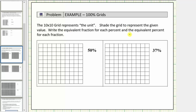In the first example we're given fifty percent. Remember, percent means per hundred, so to show fifty percent we shade fifty out of the one hundred pieces that make up this unit. This model represents fifty percent.